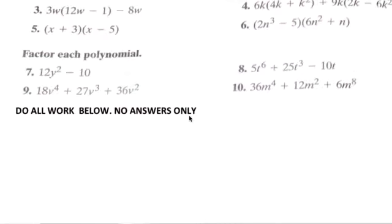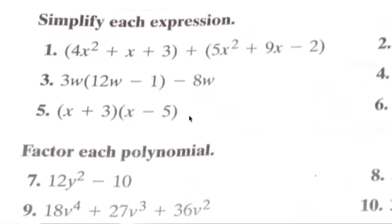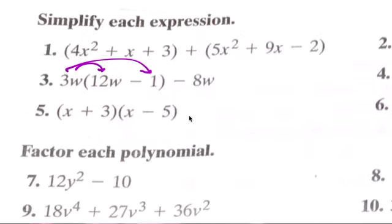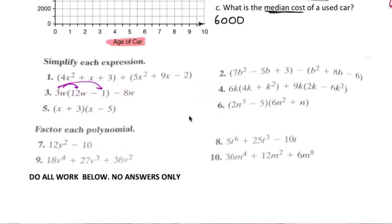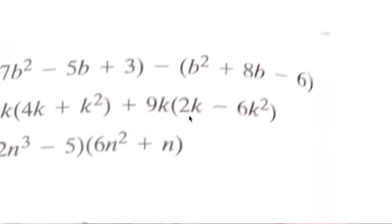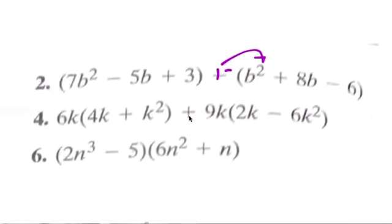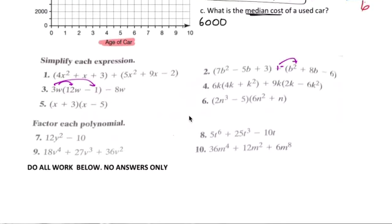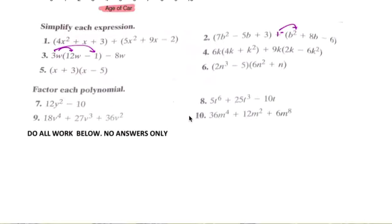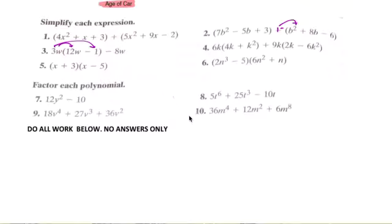I'm going to do number 7, because most of you know how to do this. You need to distribute first, right, and then combine like terms on a lot of them. Make sure you distribute the negative to all of them, and then you add the two together. Make sure you remember that for your test on Monday.